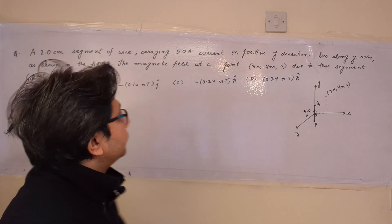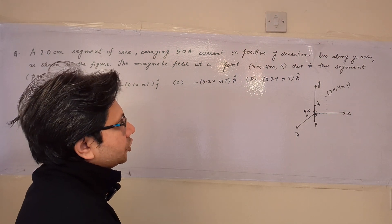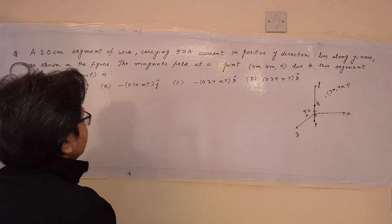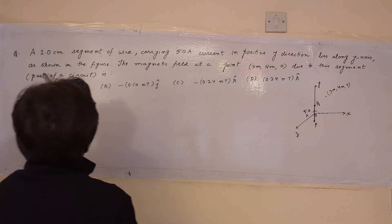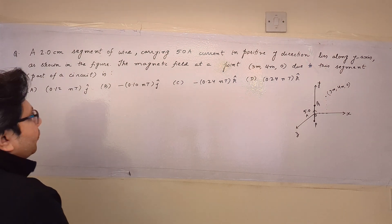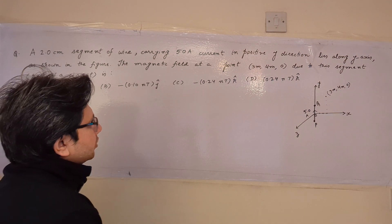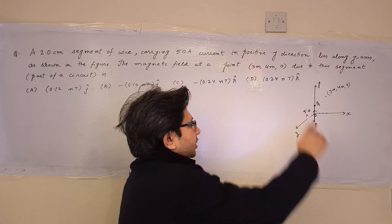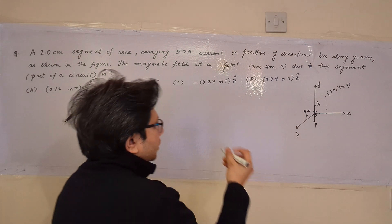Hello students. The question is: a 2 centimeter segment of wire carrying 5 ampere current in the positive y direction lies along the y-axis as shown in the figure. The magnetic field at a point (3 meter, 4 meter, 0) due to this segment, that is part of a circuit, is — option A: 0.12 nanotesla ĵ, option B: minus 0.10 nanotesla ĵ, option C: minus 0.24 nanotesla k̂, and option D: 0.24 nanotesla k̂. The problem is based on the topic of the Biot-Savart law.